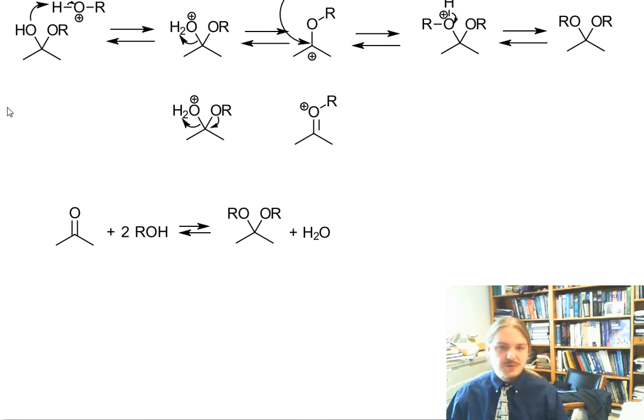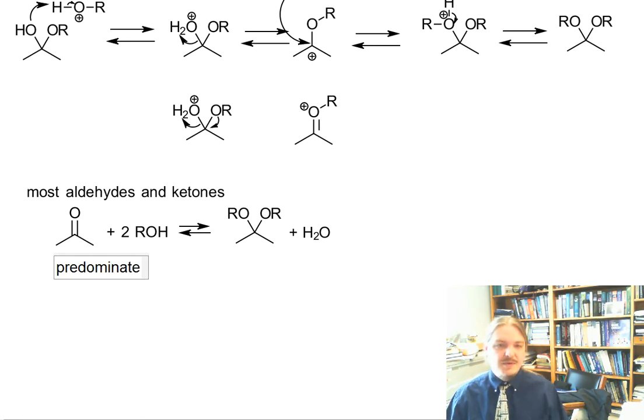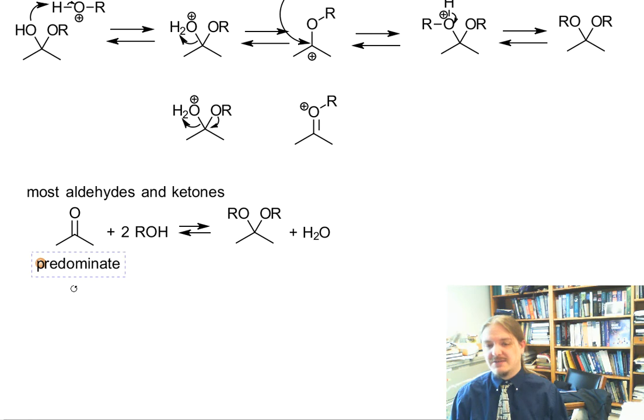And in general for most aldehydes and ketones, where things are in equilibrium is usually on the left. In my video on hydrates I shared that most aldehydes and ketones prefer the keto form and not the hydrate form. That's true here. The types of things that prefer to form hydrates are going to more likely form acetals easily. But for most aldehydes and ketones the left-hand side of the equilibrium predominates.